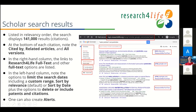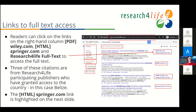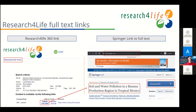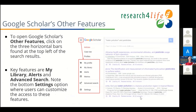We've gotten an example from Wiley. We've gone into the 360 link and you can get to the full text that way — you've gone right to the Research for Life 360 link from Google Scholar, because you logged in through Research for Life in the databases. You can set up a profile from the hamburger menu. You have My Library, Alerts, Metrics, Advanced Search, and Settings.